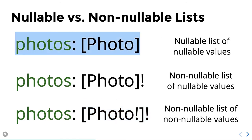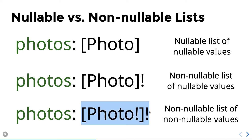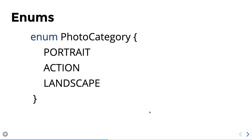To clarify the exclamation symbol: a nullable list with nullable values means Photos can be null; a non-nullable list with nullable values means the array will always be there but values can be empty; and a non-nullable list of non-nullable values means the array and every photo will always be present. We can also define enums, interfaces, and unions in the type definitions.